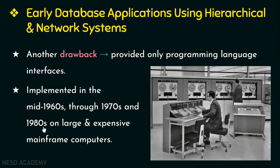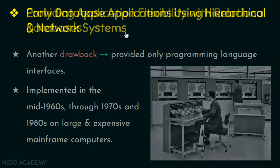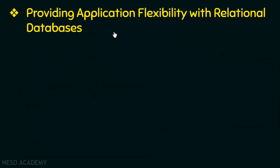These early database systems were implemented on large and expensive mainframe computers, and they were implemented in the mid-1960s through the 1970s and 1980s. So that is about the early database applications using hierarchical and network systems.